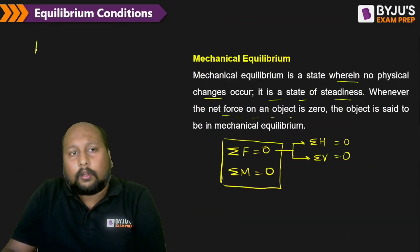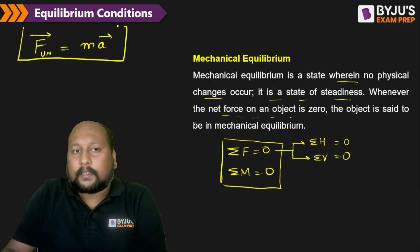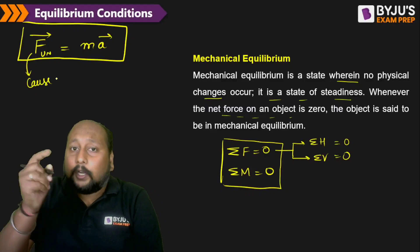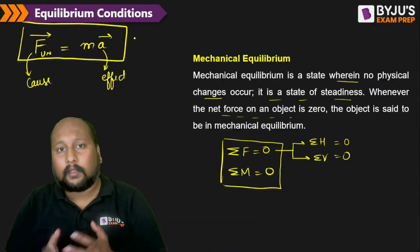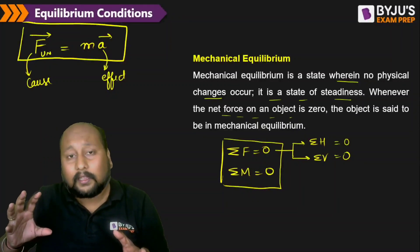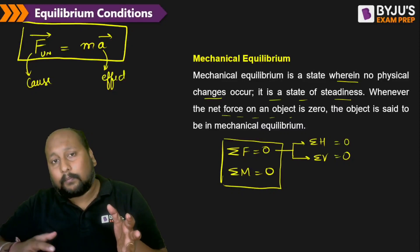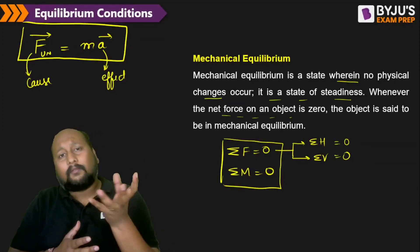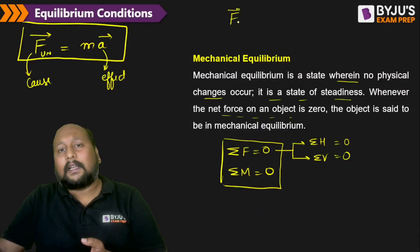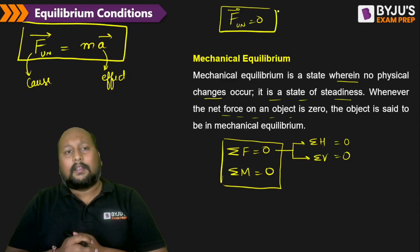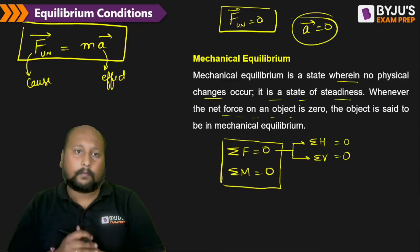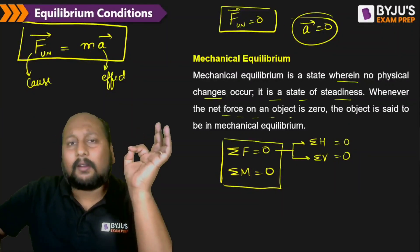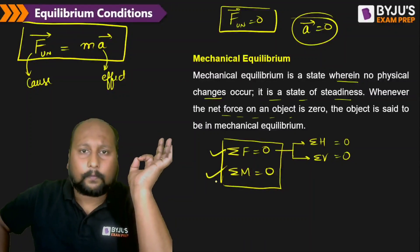According to Newton's second law, F equals mass times acceleration — force is the cause and acceleration is the effect. Whenever we try to change the state of a body, a force must be applied. If the net force acting on the body equals zero, there is no cause, and the acceleration on that body will be equal to zero. A body is under equilibrium when both conditions — net force and net moment equal to zero — are satisfied.